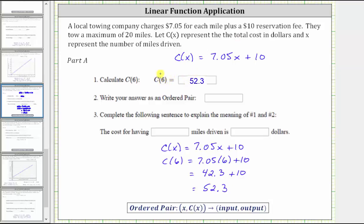So C of six equals 52.3, where the input six is the number of miles driven, and the output or function value 52.3 represents the total cost in dollars. Number two: we're asked to write the answer as an ordered pair. Every ordered pair is in the form of the input comma the output, or X comma C of X. Therefore the ordered pair is (6, 52.3), meaning the cost of having six miles driven is $52.30.